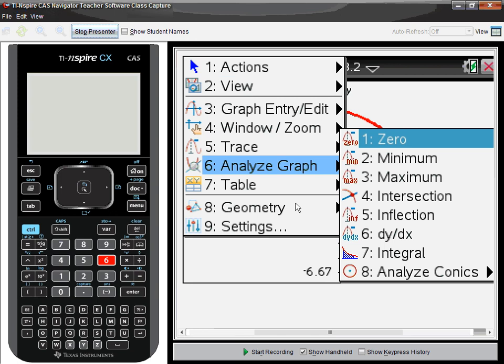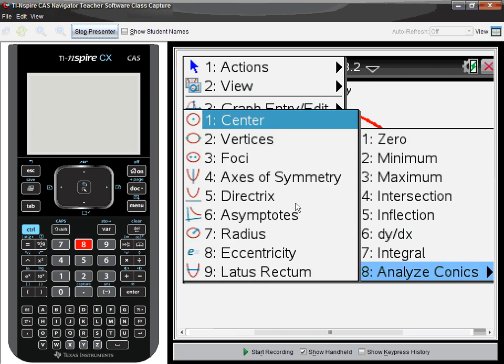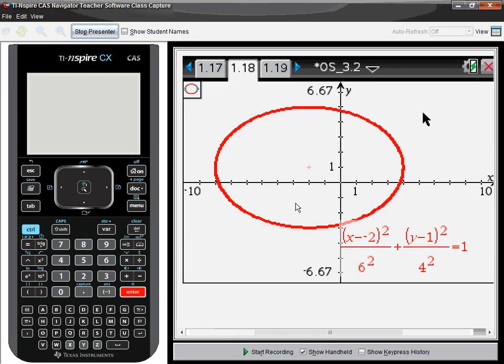Analyze graph, conics. The vertices would be along the major axis, which in this case are 4, 1, and negative 8, 1.